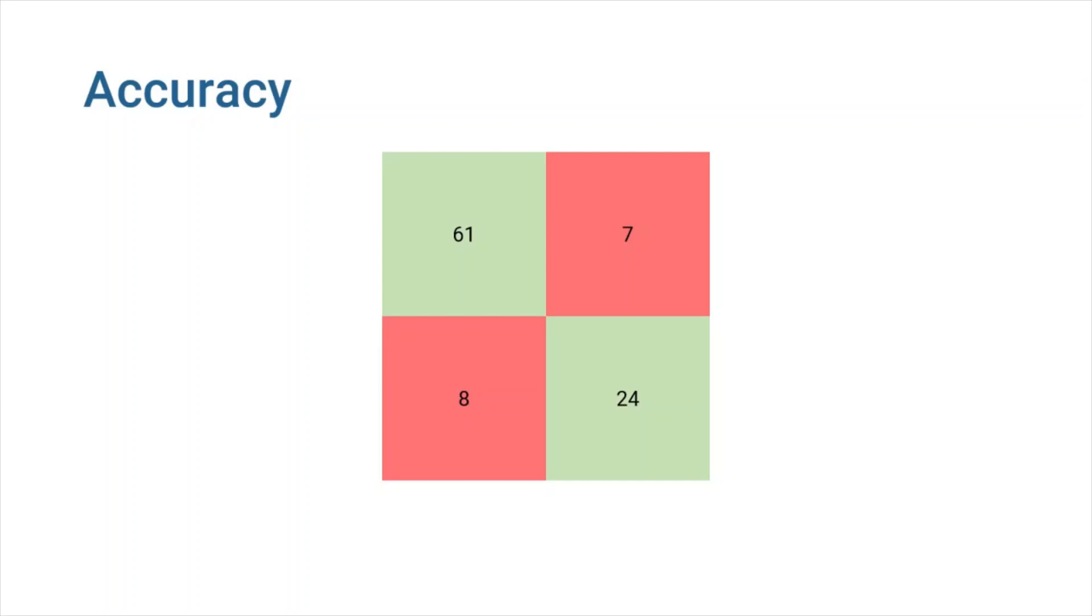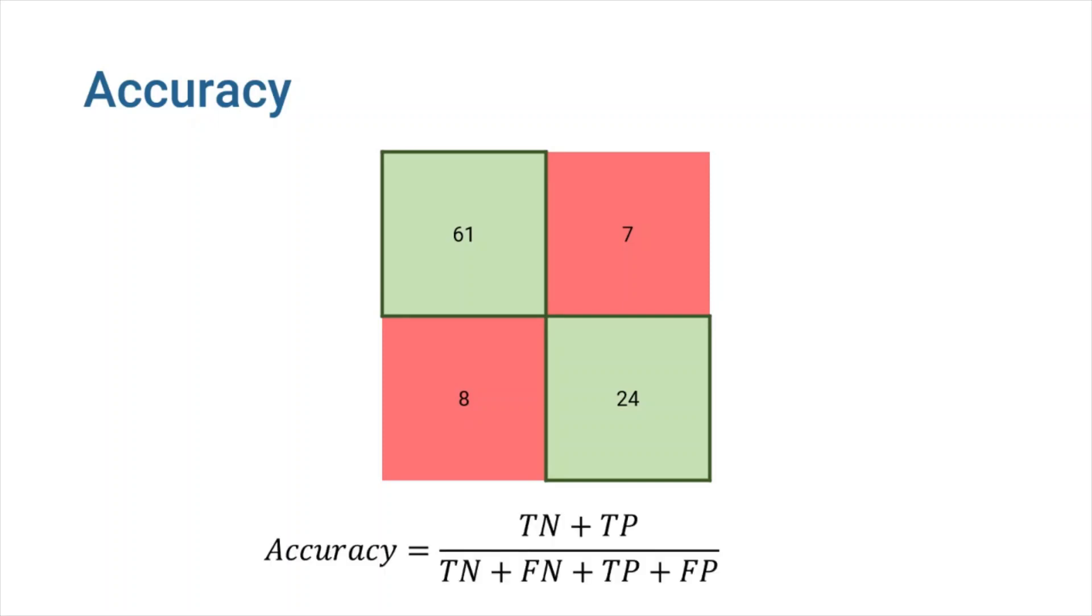Accuracy is the percentage of correct classification. Consider this confusion matrix from our pregnancy test example. As we discussed before, the number of correctly classified samples is shown by the values on the diagonal of the matrix, which contains true negatives and true positives. In order to calculate accuracy, we should add the true negative and true positive values and divide it by the sum of all elements in the matrix.